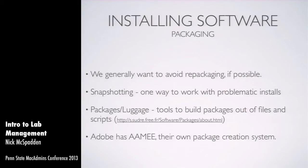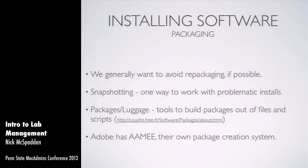We generally want to avoid repackaging if we can, because every time you reinvent the wheel there's a chance you might make a mistake. There are ways to get around installers that really suck — a trick called snapshotting. Tools like Jamf Composer or Absolute Manage Installease let you take a snapshot before and after you install something, which tells you all the files that were changed or added. That's one way of creating packages as lab managers when setting up images and deploying software.